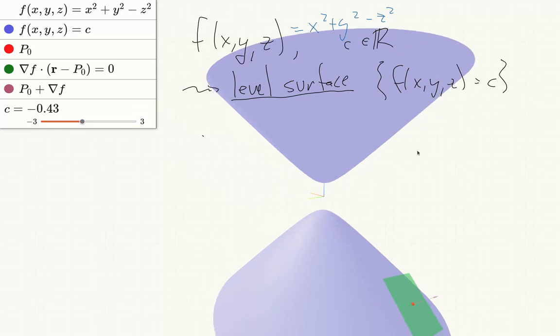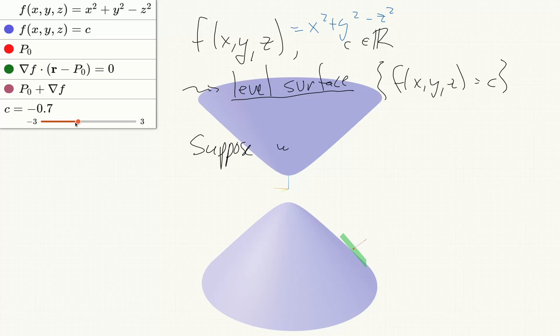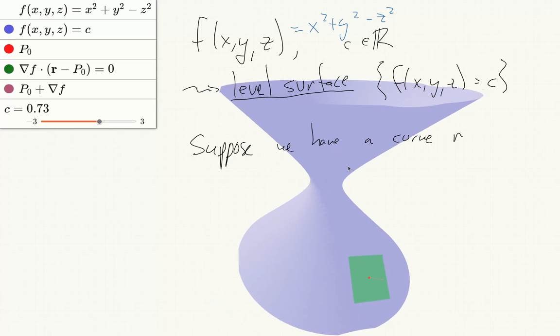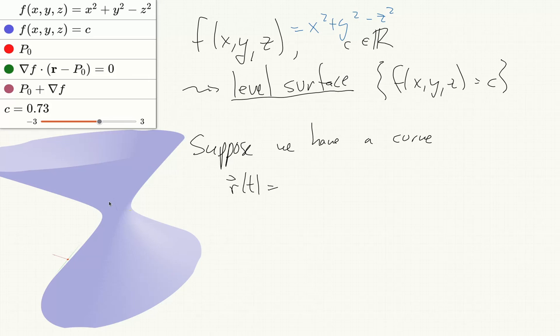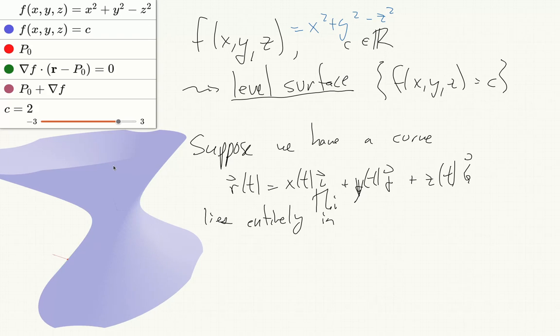Now suppose we have a curve r of t equals x of t i plus y of t j plus z of t k. And the curve lies entirely in this surface, or on this surface, if you prefer.